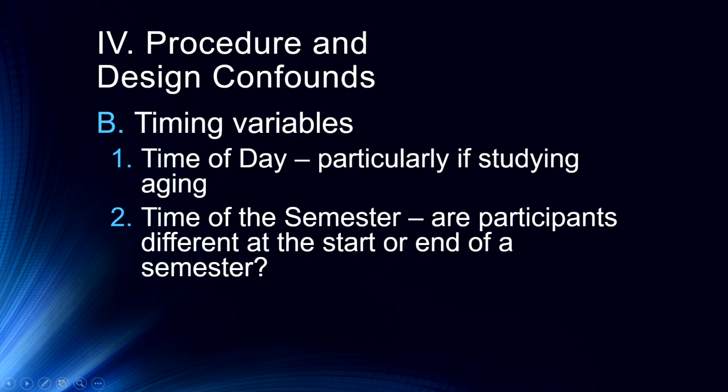The reason this is important is that there are circadian rhythm effects on mood and cognition. Particularly if we're studying aging — older adults have better cognitive performance in the morning, doing very well at 8 o'clock, but very poorly in the afternoon. Whereas your average 19-year-old will do poorly at 8 o'clock in the morning but pretty well in the afternoon. We also need to consider time of semester — are people doing their research credits at the beginning of the semester more motivated than those at the end? If you're doing a between-subjects design, you want to be running both conditions at the same time throughout the semester.